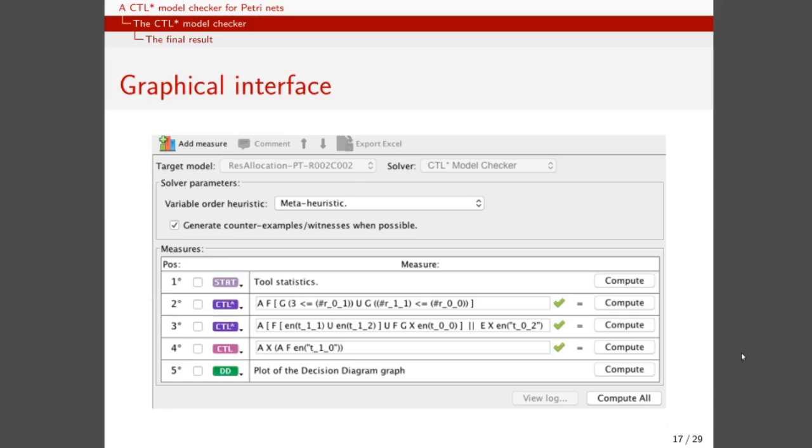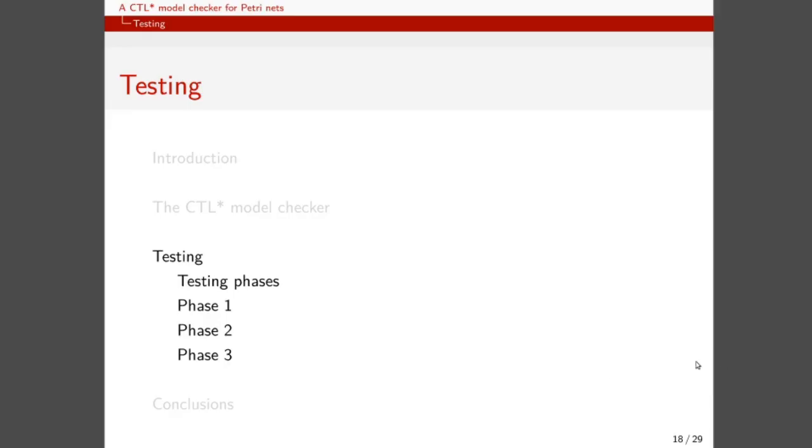Our CTL-STAR model checker can be used from the graphical interface of the GreatSPN editor or directly from the command line, and a demonstration will be available in this conference. Now, let us describe the testing phases we've used to validate our program.